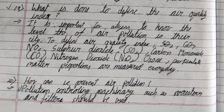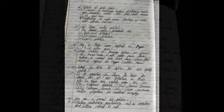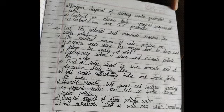How can we prevent air pollution? Pollution-controlling machinery such as arresters and filters should be used. Proper disposal of stinking waste generated in the city should be taken care of. Control of atomic tests and chemical weapons, and a total ban over CFC production are also needed.